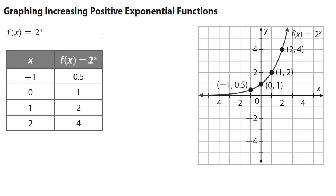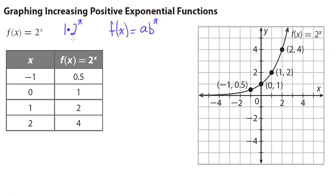The first example is the increasing positive exponential function f of x equals 2 to the x power. This 2 is actually b because it is to the x power. You might wonder where a is — a is the invisible number 1, so you could write it as 1 times 2 to the x power. Our a value is 1 and our b value is 2.